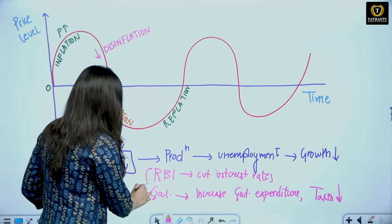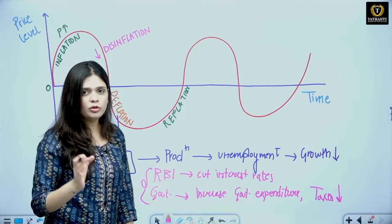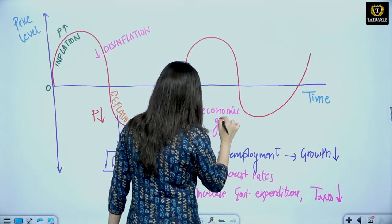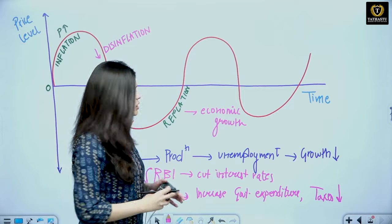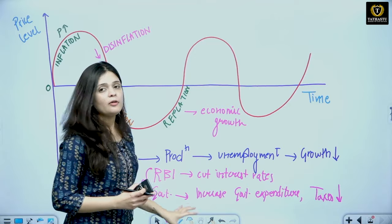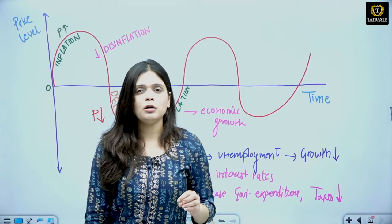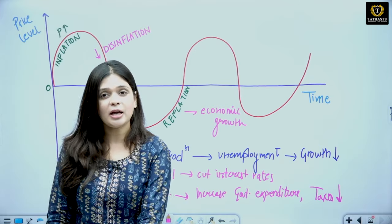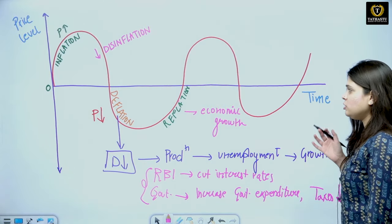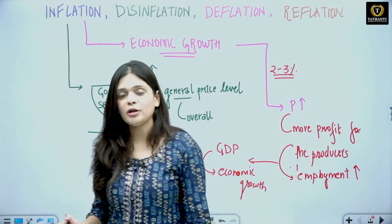So these two — monetary policy tools and fiscal policy tools — get us out of deflation and into reflation, which is good news as economic growth will increase. But once we reach the reflation stage and are back on the positive side, we need to ensure we do not enter re-inflation. Once out of deflation and into reflation, the RBI and government can relax — their monetary and fiscal policy need not be as expansionary as before. So that covers inflation, disinflation, deflation, and reflation. I hope your concepts are clear. Thank you and have a nice day.